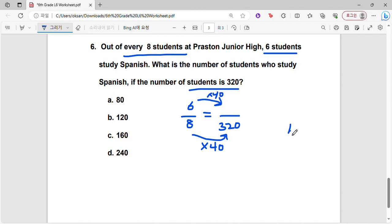Okay, let's do 40 times 6 here. 6 times 0 is 0. 6 times 4 is 24. So we would write 240 here. So there would be 240 students who study Spanish out of the 320 students in Preston Junior High. So D is the correct answer.